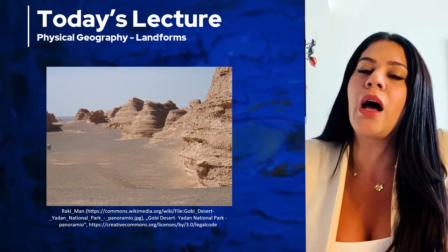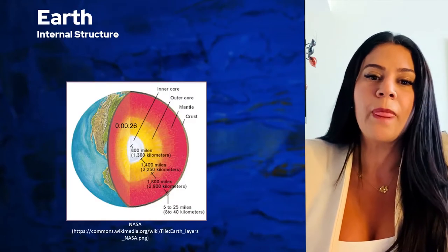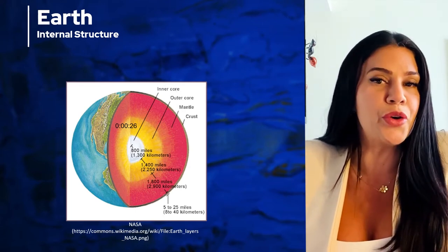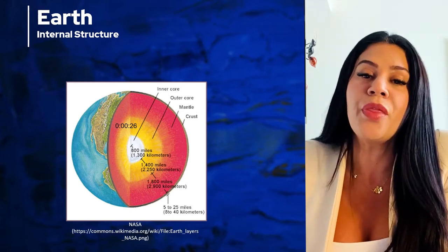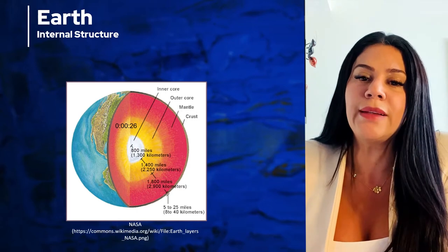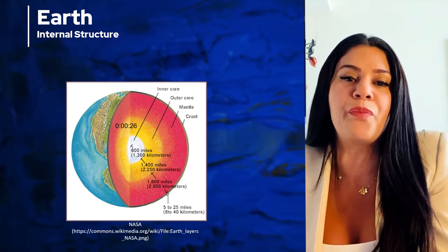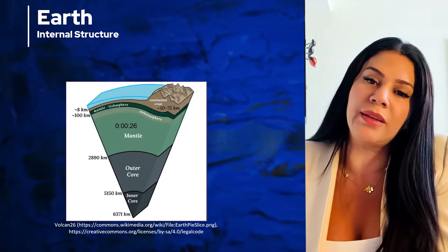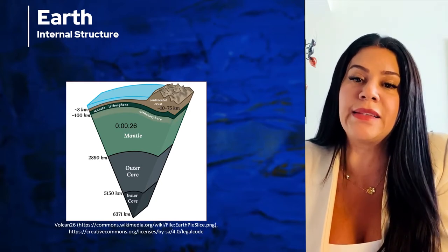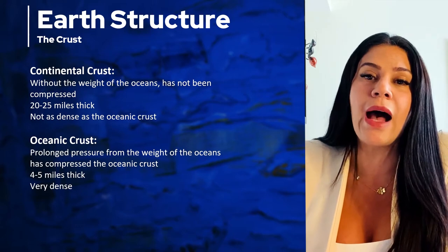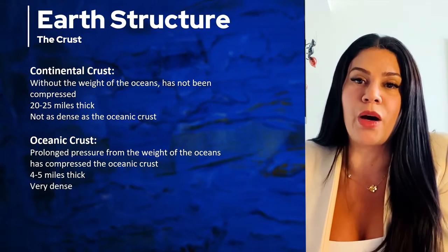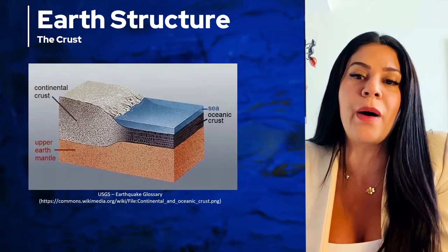If we cut the earth we see in the middle the core. The core has two parts: the inner core and the outer core. They're both made of iron, but the inner core is solid iron because of the enormous amount of pressure that prevents it from melting, and the outer core is molten iron due to the intense heat. The earth's outer layer is called the crust, made of solid rock, and it's the thinnest part of the entire earth. The thickness of the crust depends on whether it's part of the land or part of the ocean.